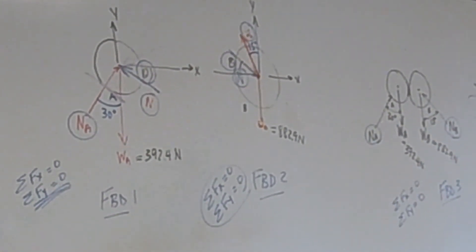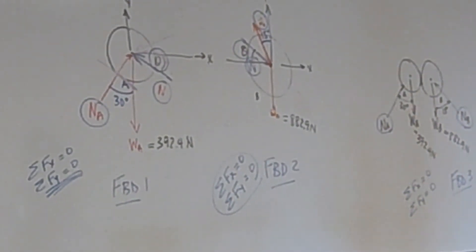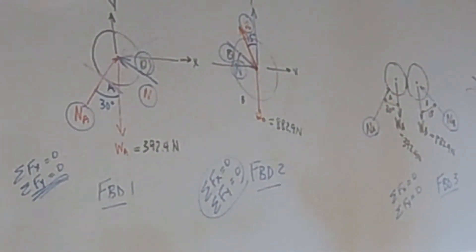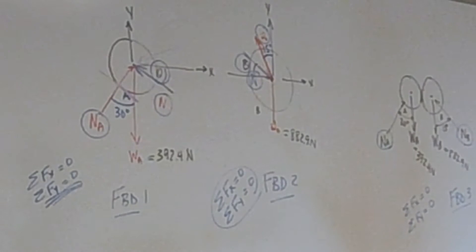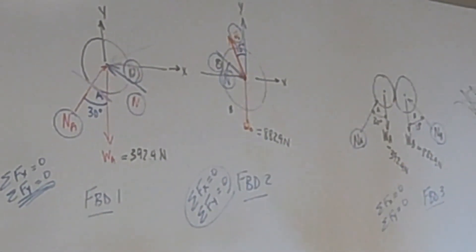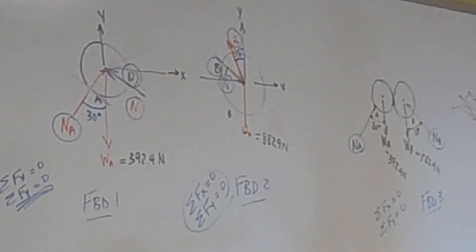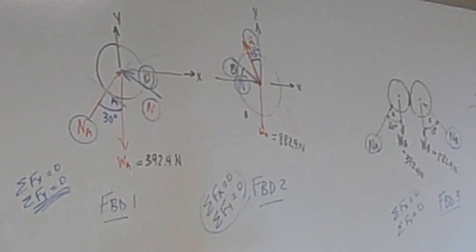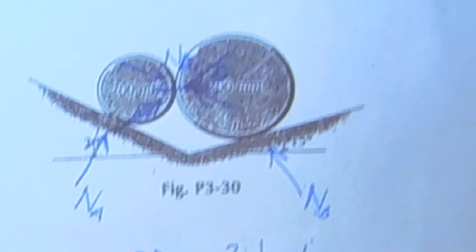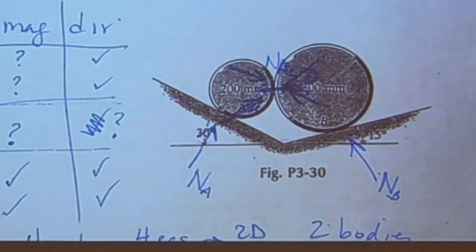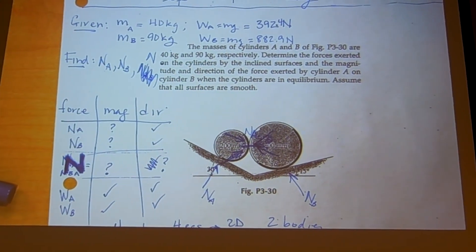So the important thing that we're doing today in class is looking at the setup. Check out the picture. Read the words. Write down the given and find. Do the table. How many unknowns do we have? How many equations do we need? How many bodies do we need to analyze and draw the free body diagram? That's it. The next step is to solve the whole problem with statics. So the homework that I'm assigning today, homework number four.